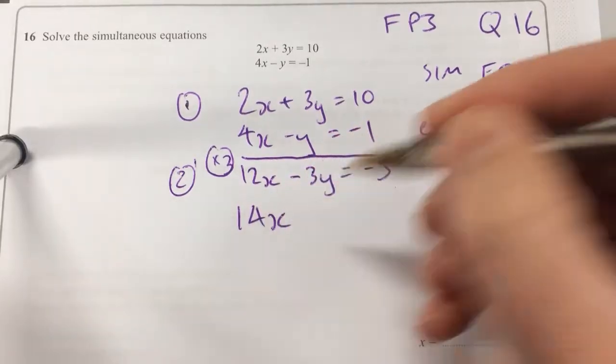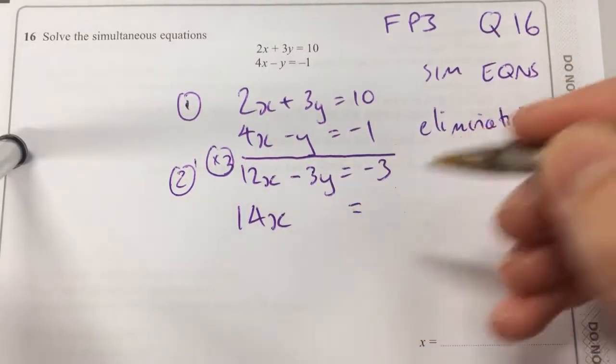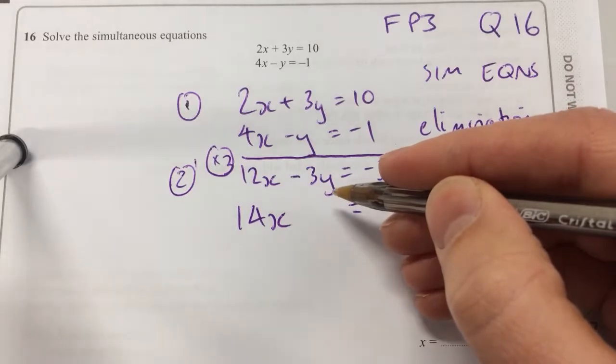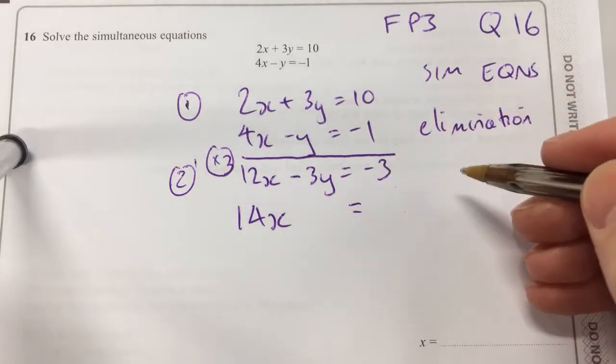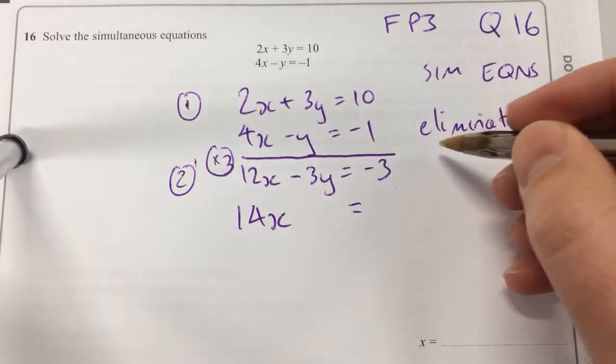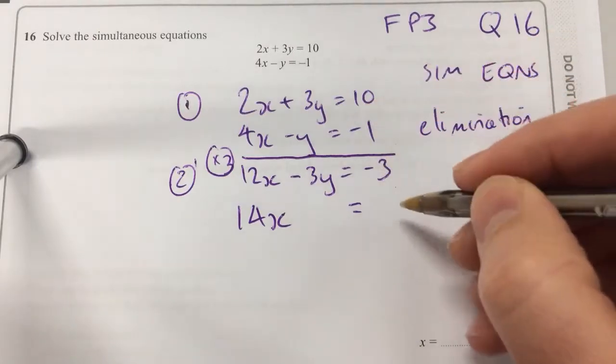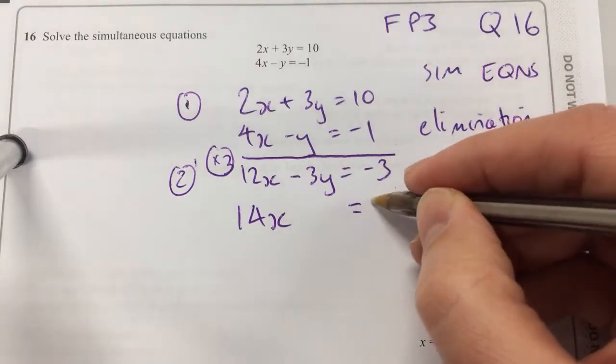So I'm going to have 14x. What's going to happen here? The 3y is going to add minus 3y, so it's going to be nothing. It's going to be eliminated. And 10 add the minus 3 will be 7.